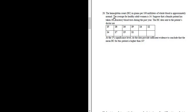Problem number 28. The hemoglobin count in grams per 100 milliliters of whole blood is approximately normal. The average for healthy adult women is 14. Suppose that a female patient has taken 10 laboratory tests during the past year. The HC data sent to the patient's doctor are, so these are her results. At the 1% significance level, that's going to be our alpha, do the data provide sufficient evidence to conclude that the mean HC for this patient is higher than 14?